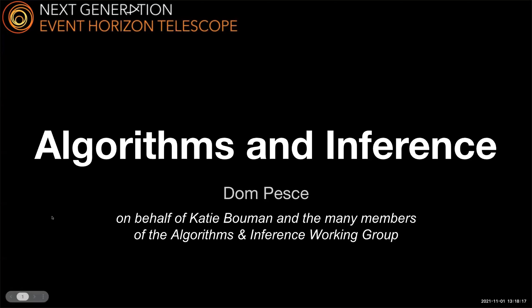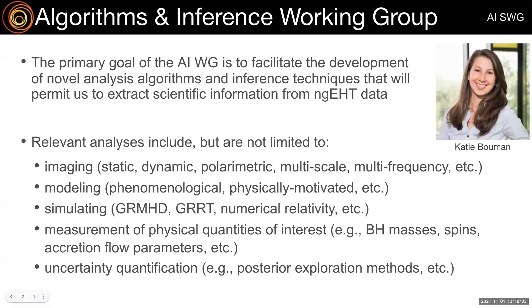Today I'm going to be talking about the algorithms and inference working group, or the AI working group as we've taken to calling it. I'm co-coordinating this group along with Katie Bouman, and the primary goal of the AI working group is to serve as a sort of central hub for algorithm development within the NGEHT. In that sense, the AI working group is a bit different from most of the other science working groups, because we don't really expect to be driving the science goals of the NGEHT, but rather we envision this working group will serve more of a supporting role.